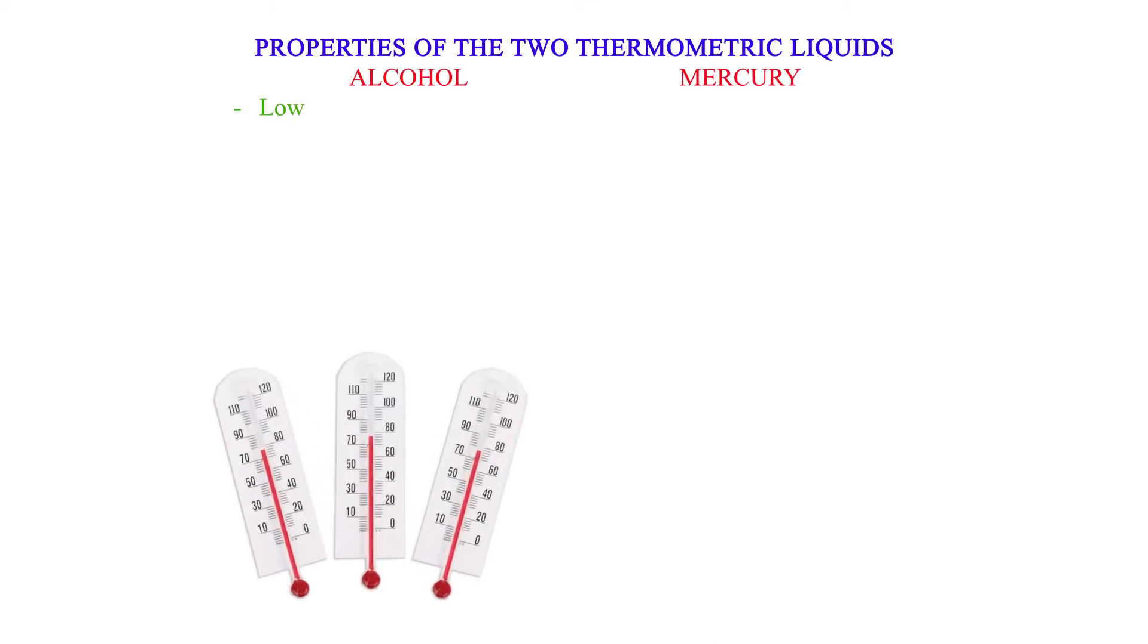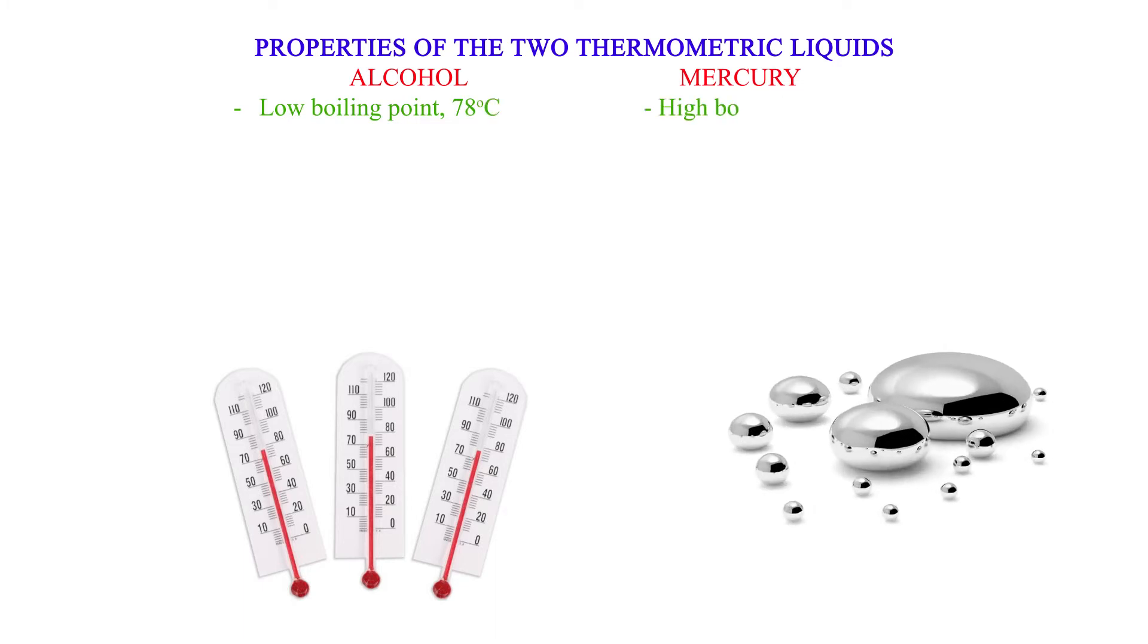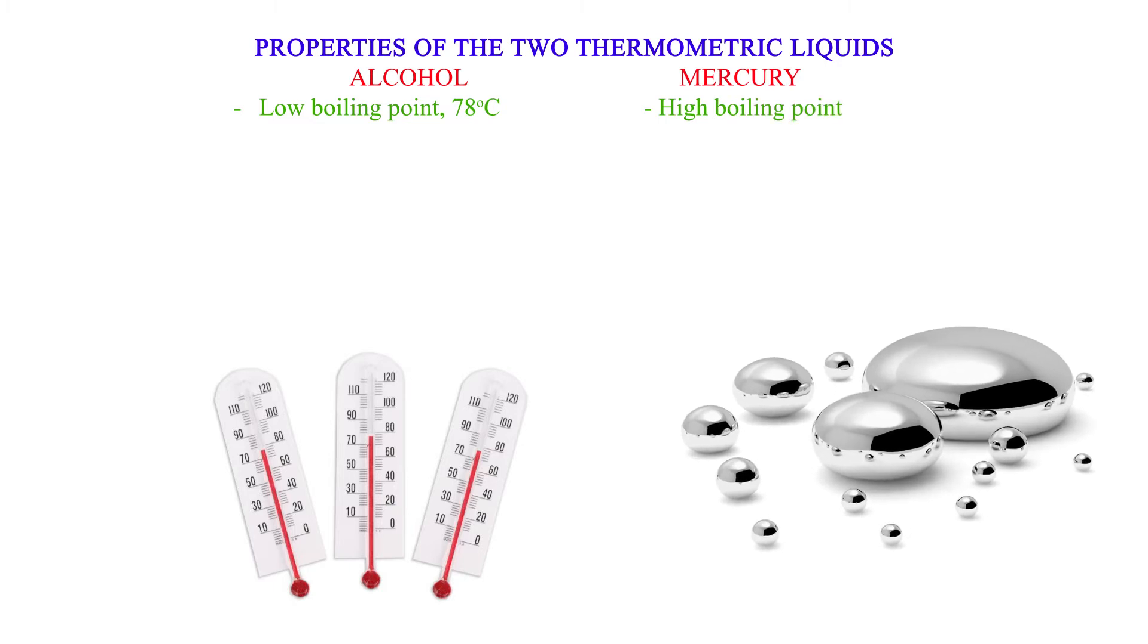Properties of the two thermometric liquids. Alcohol: Low boiling point, 78 degrees Celsius; Low melting point, negative 115 degrees Celsius. Mercury: High boiling point, 357 degrees Celsius; Relatively higher melting point, negative 39 degrees Celsius.